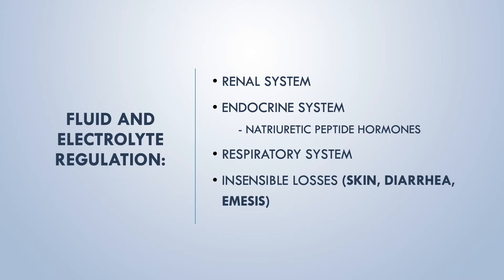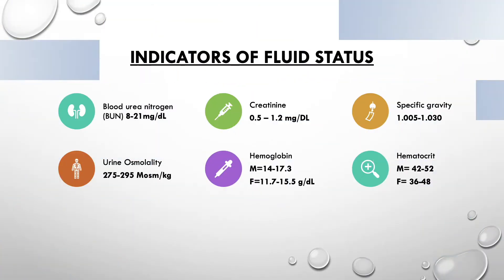Several systems regulate fluid and electrolyte balances. The renal system is the primary regulator that maintains homeostasis. The endocrine system assists through hormonal release, including natriuretic peptide hormones (NPH) and the renin-angiotensin mechanism, both of which work to increase blood pressure when it is low. The respiratory system regulates fluid and electrolytes through respiration, and insensible losses occur via the skin through sweating, as well as through diarrhea and emesis.